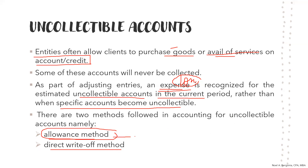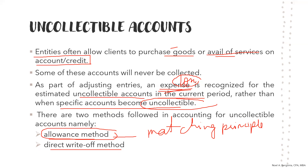The matching principle means we match the expense in the period where the income was recognized. That's why we recognize the expense immediately rather than waiting for it to be uncollectible — to match it with our income. The direct write-off method does not follow the matching principle, because under direct write-off, you only record the loss when the customer actually fails to pay. We don't want that; we want to recognize it immediately at the time it is estimated to occur.